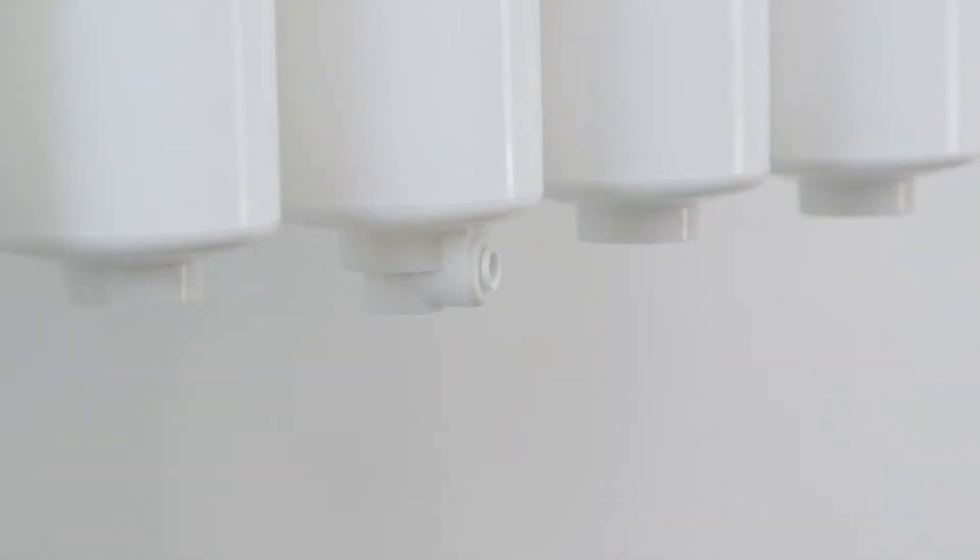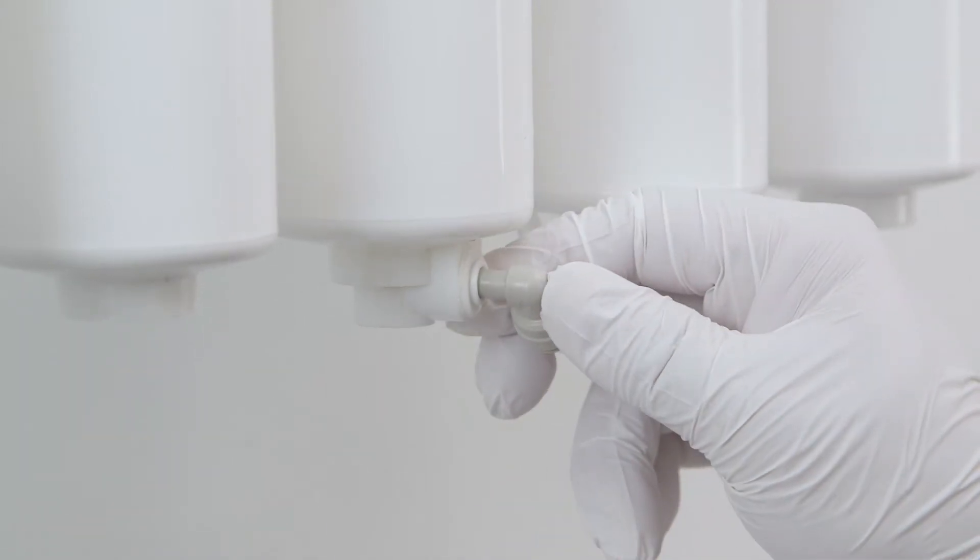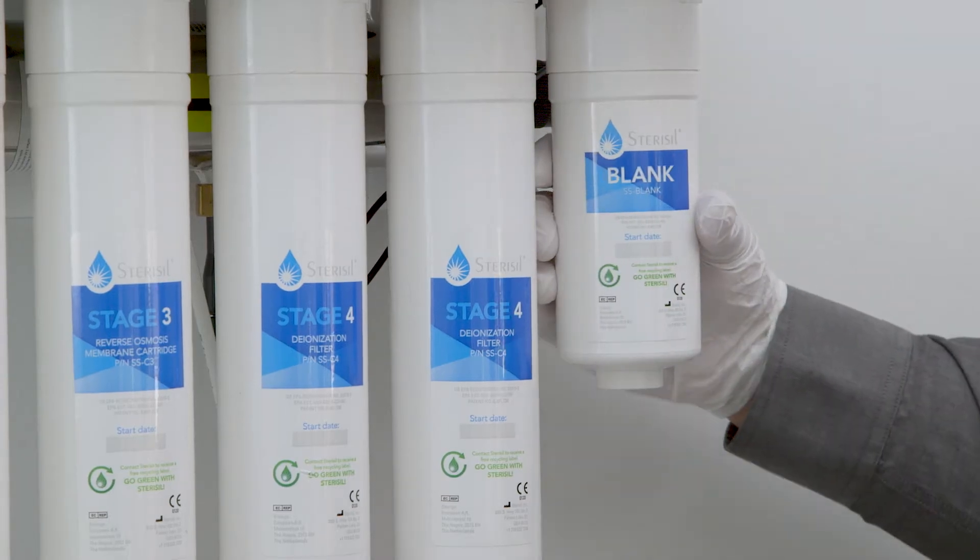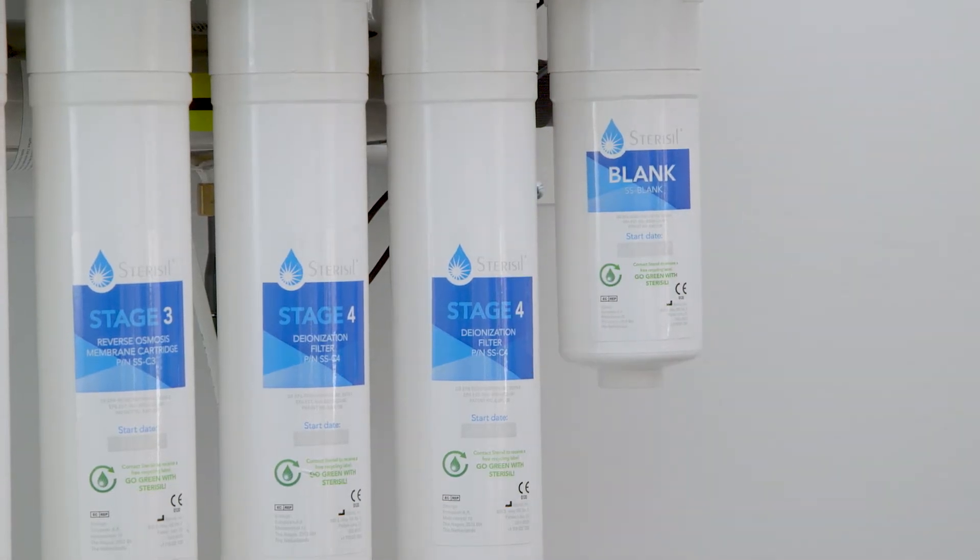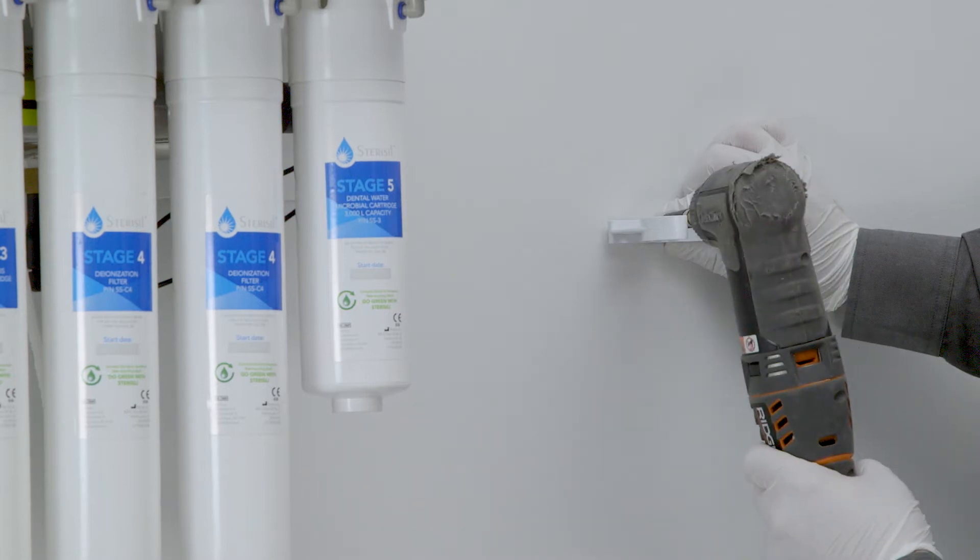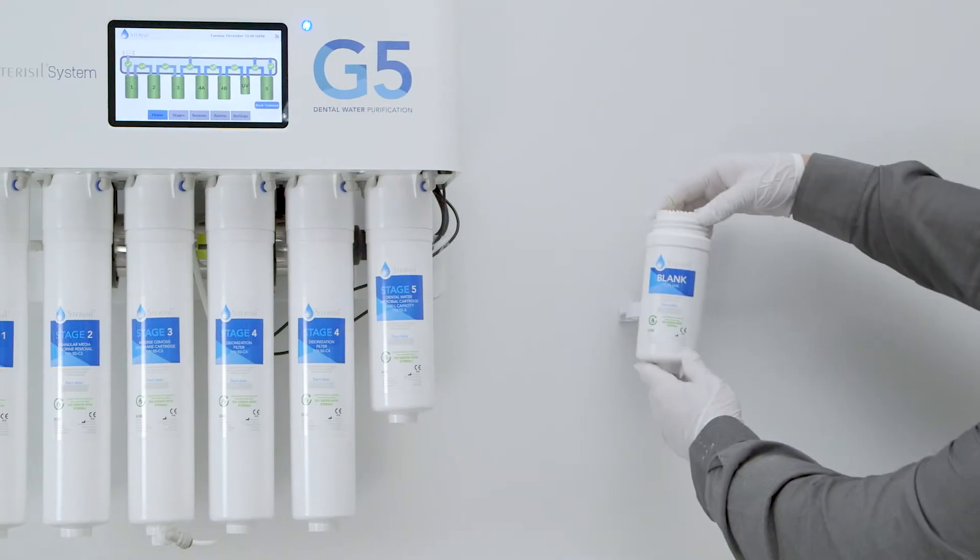Once all the cartridges are installed, remove the brine plug from the bottom of the stage three cartridge and insert the brine tube into the bottom of stage three. Blank cartridge. The blank cartridge is essential for troubleshooting possible blockages inside the system. Mount the clip on the wall near the system and place the cartridge in the clip.